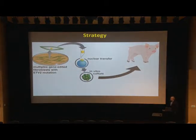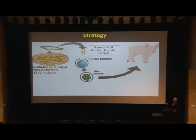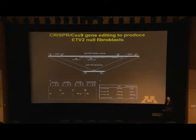This slide schematizes the approach we took. We isolated porcine embryonic fibroblasts, used CRISPR-Cas9 to delete ETV2, and established a cloning program in the laboratory. Using somatic cell nuclear transfer technology, we enucleated the cells, replaced them with the nucleus containing the mutated ETV2 gene, allowed them to develop in culture, and at the morula stage engrafted them into pseudopregnant gilts.